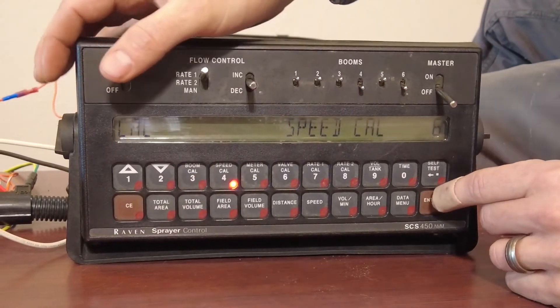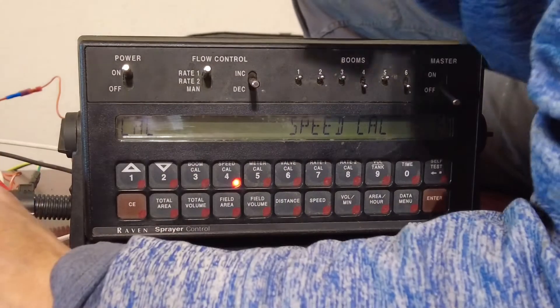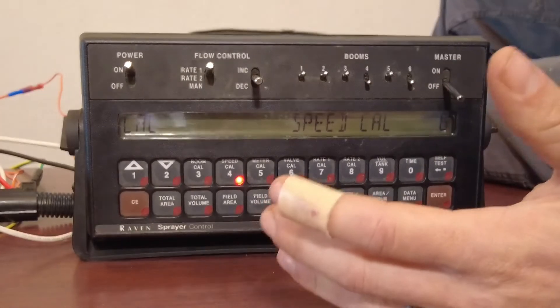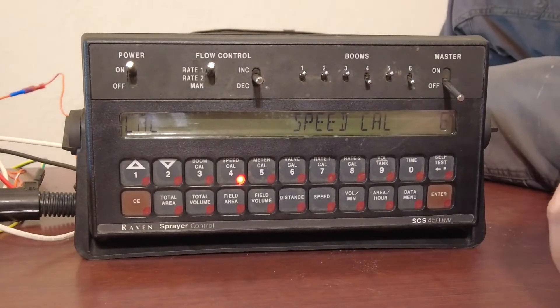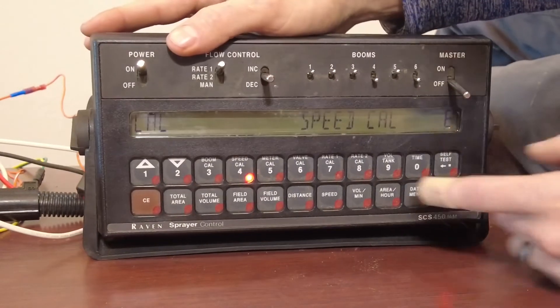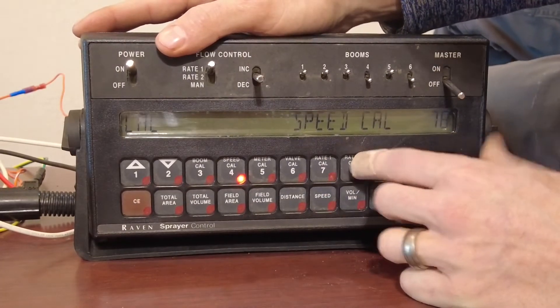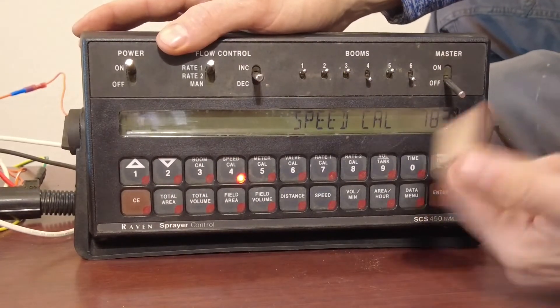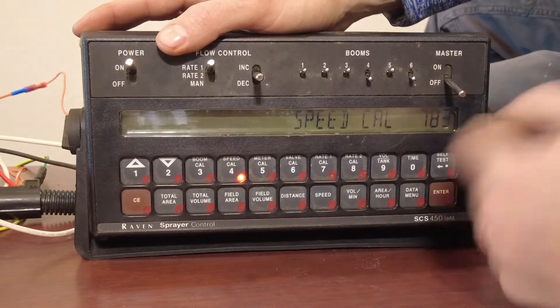We'll go back to our speed cal. Our speed cal, because we're using an astro speed sensor, that is going to be written in the book with your astro. It is typically 783. And you can adjust this number until the speed on here matches the speed of your tractor.